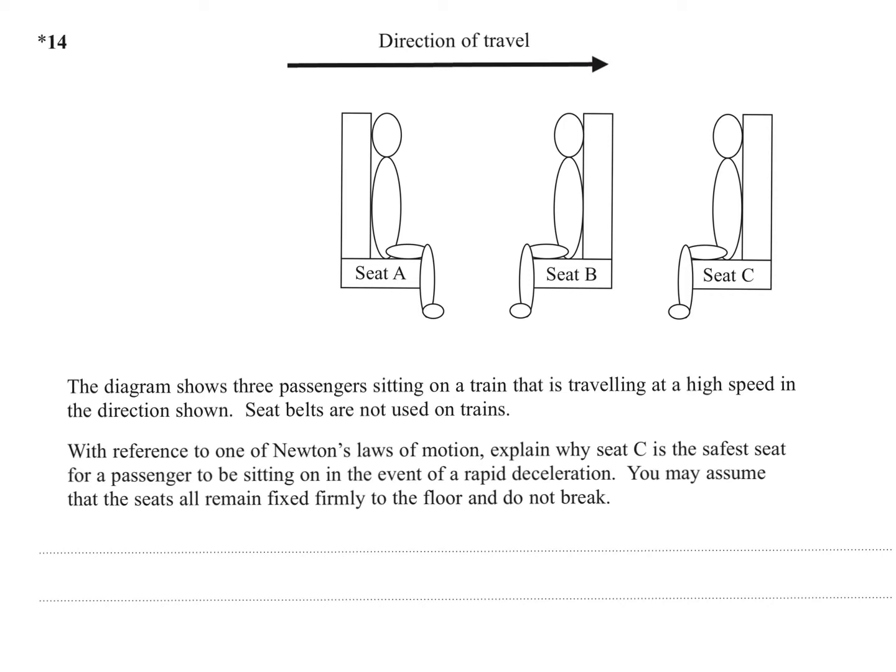Now it's easy for passenger B and passenger C because they've got a seat back that will push on them. Passenger A here only has the seat cushion pushing on them, so they only have the friction from the seat cushion to provide this backward force. So passenger A is going to come out of their seat, or at least is in danger of that happening.